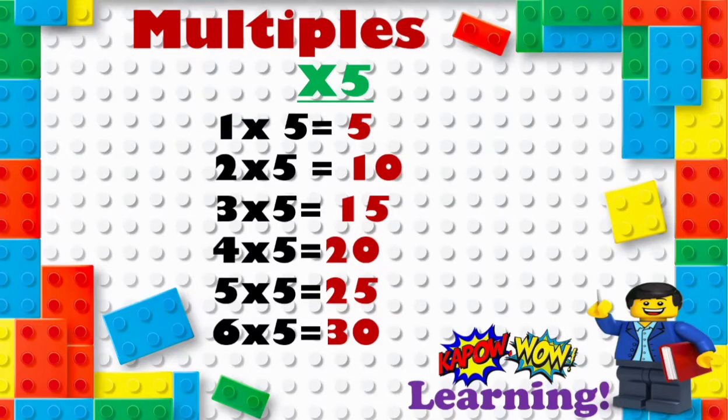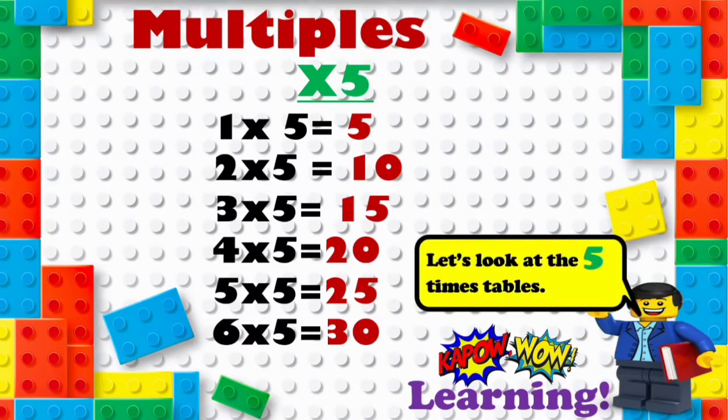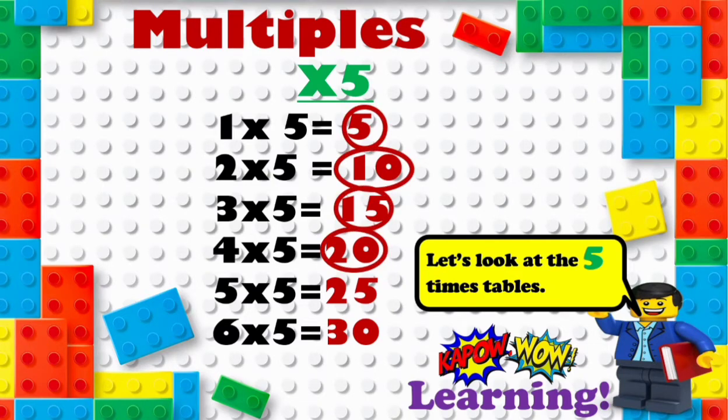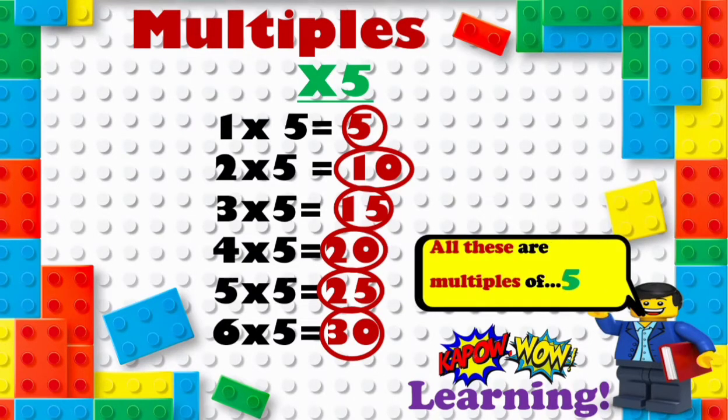So let's look at these in the five times table. Where do you think the multiples of five are? You should have said five, ten, fifteen, twenty, twenty-five, thirty. Therefore all of these numbers highlighted are multiples of five.